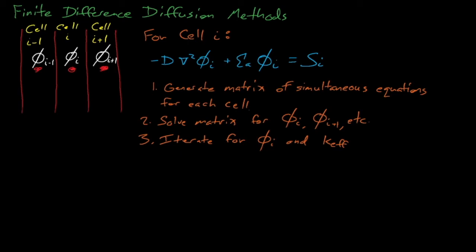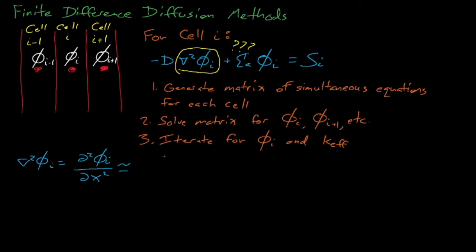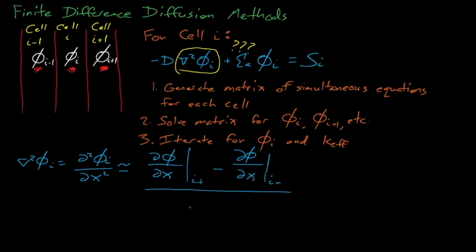We want to use the diffusion equation to generate an expression for the flux in some cell I, where phi of I is the flux in cell I and S of I is the neutron source for cell I. The sigma absorption term is fairly straightforward — it just provides a coefficient that is attached to phi of I. But how can we compute the Laplacian of phi of I in our finite element? In the x-dimension for a one-dimensional slab, the Laplacian is the second derivative of the flux with respect to x, which is approximately equal to the difference of the first derivatives of the flux across some delta x — the center-to-center distance for each element. We will use the first derivatives of the flux at the I-plus boundary and at the I-minus boundary of cell I.